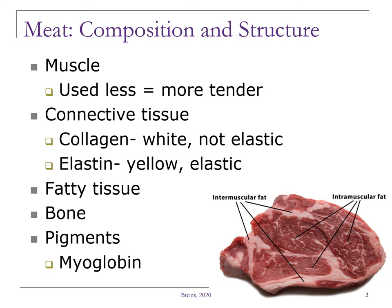The fourth component is the bone. Bones are found in meat sold — some products contain the bone, some products don't. And then lastly are the pigments. The color of meat comes mainly from the pigment called myoglobin. Different meats have different amounts of myoglobin, thus affecting the color. For example, pork is going to be less red in color because it contains less myoglobin than beef.